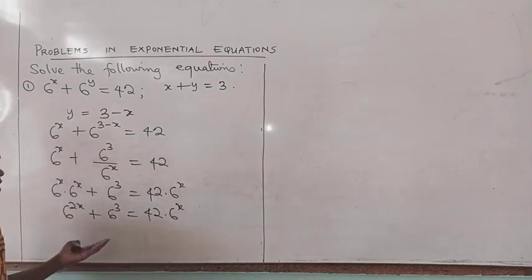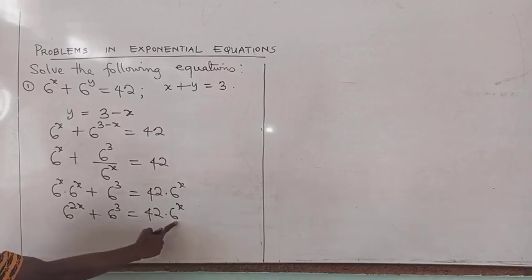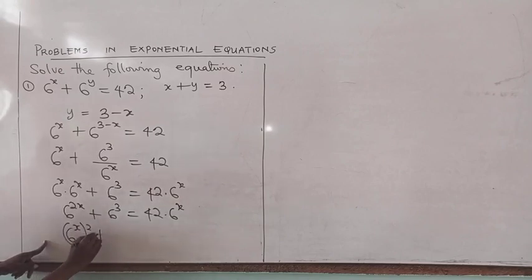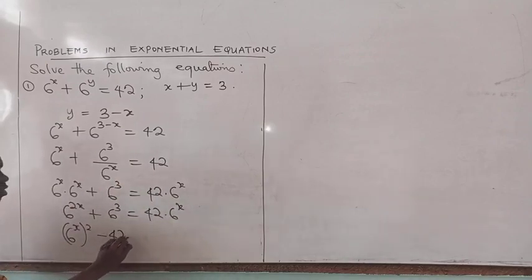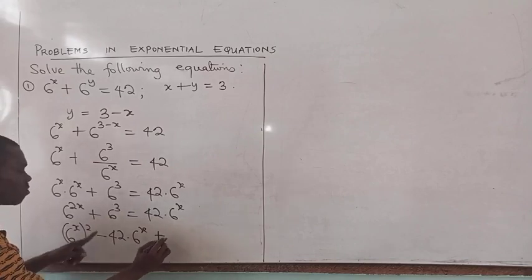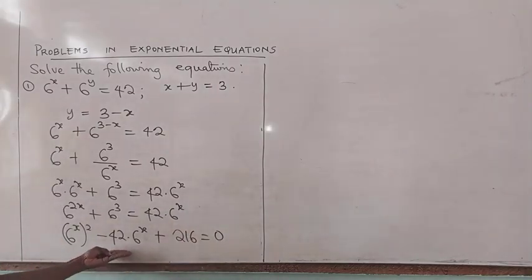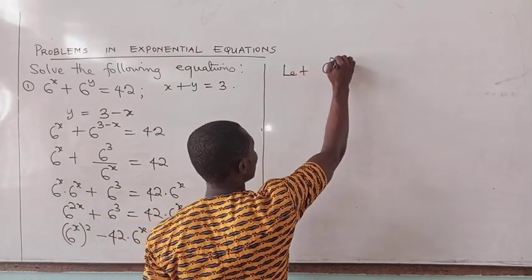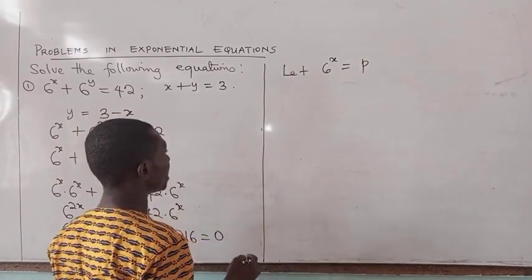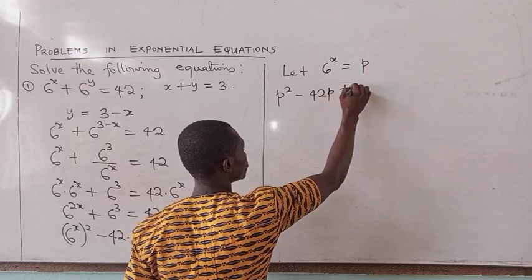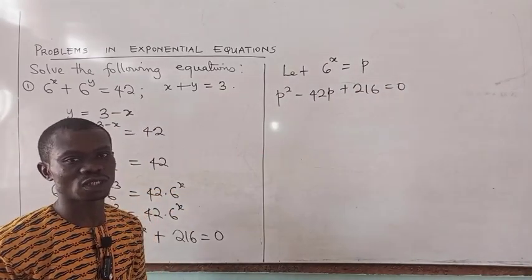You can see this is leading into the form of a quadratic equation. The factor to substitute is 6 raised to the power x. Bringing everything to one side: 6 raised to the power 2x minus 42 times 6 raised to the power x plus 6 raised to the power 3 — which is 216 — equals 0. Let p equal 6 raised to the power x. Substituting, we get p squared minus 42p plus 216 equals 0, which we can solve as a quadratic.